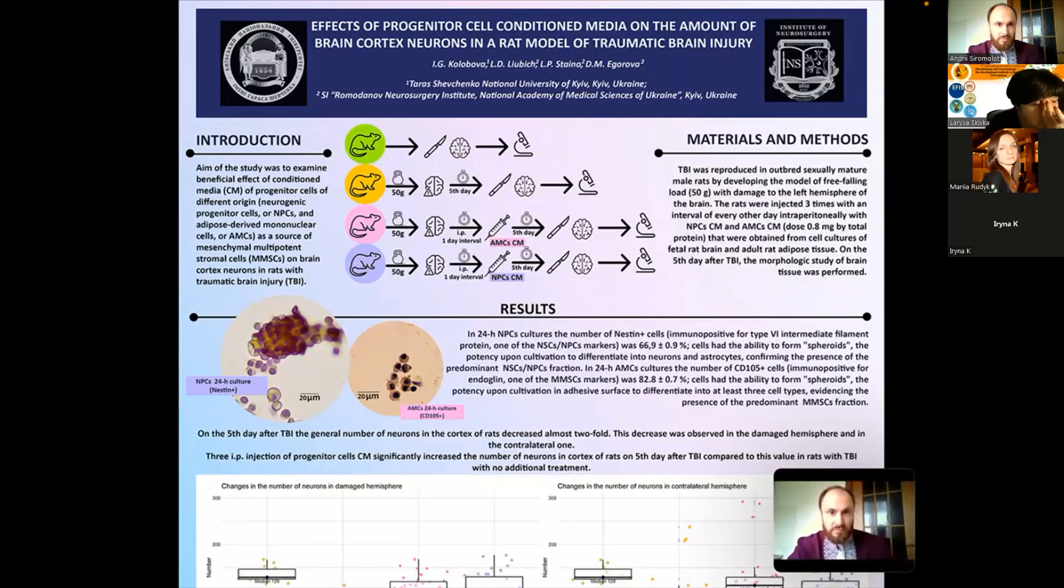So the rats in groups three and four were injected intraperitoneally three times with an interval of one day with neurogenic progenitor cells and adipose-derived mononuclear cells conditioned medium. These conditioned mediums were obtained from the cells of fetal rat brain and adult rat adipose tissue.